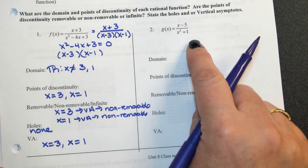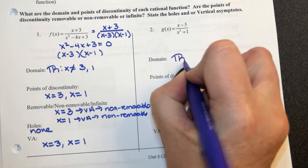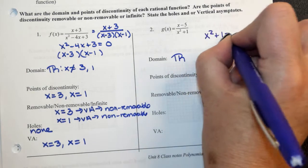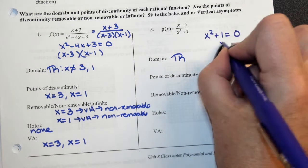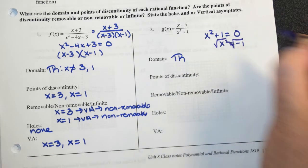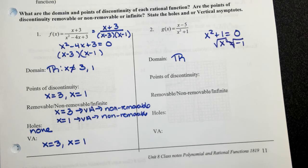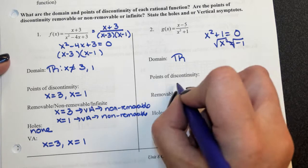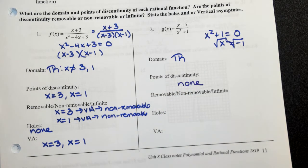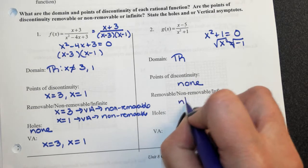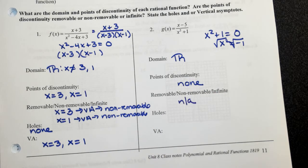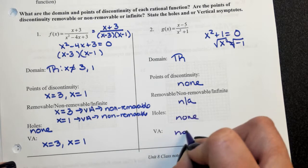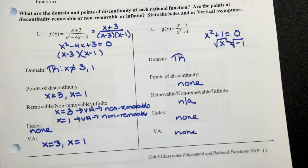Looking at number 2 — the domain is going to be all real numbers. Setting the denominator equal to zero gives x squared equals negative 1. Solving for x gives imaginary values. So the domain is all real numbers, there is no place where this function is undefined, no points of discontinuity, no removable or non-removable discontinuity, no holes, and no vertical asymptotes.